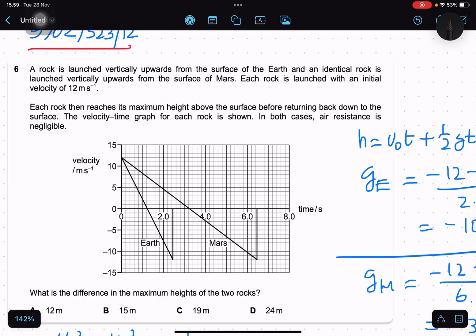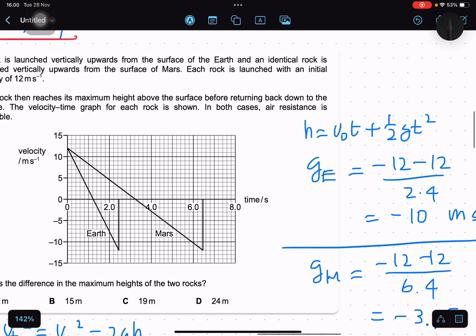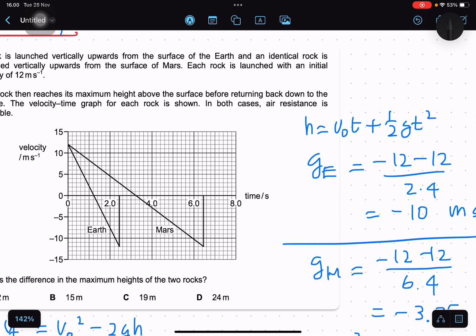Each rock then reaches its maximum height above the surface before returning back down to the surface. The velocity-time graph for each rock is shown. In both cases, air resistance is negligible. What is the difference in the maximum heights of the two rocks?